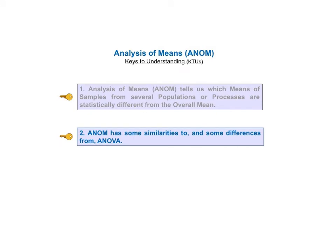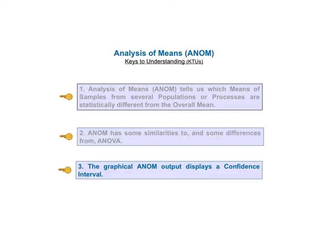The second KTU says that ANOM has some similarities to and some differences from ANOVA. Key to understanding number three tells us that the output from an ANOM is graphical in that it displays a confidence interval.